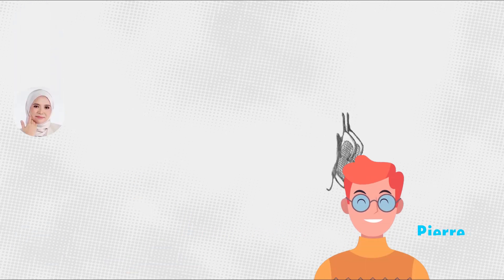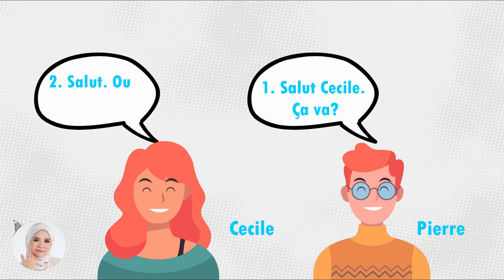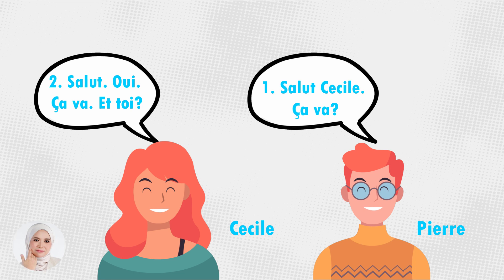The second conversation is between Pierre and Cécile. Pierre says, 'Salut, Cécile. Ça va?' Cécile replies, 'Salut. Oui, ça va. Et toi?' These two are friends because they use 'toi,' which means 'you' and comes from 'tu.' Salut means 'hello' or 'hi.' Ça va can be used in two contexts: as a question meaning 'how are you?' and as a response meaning 'okay' or 'I'm fine.' You just change the intonation.